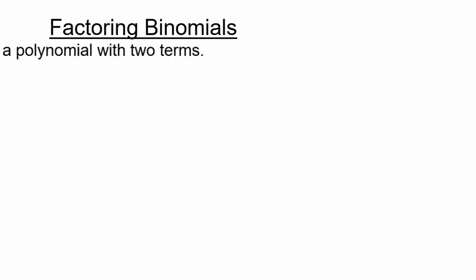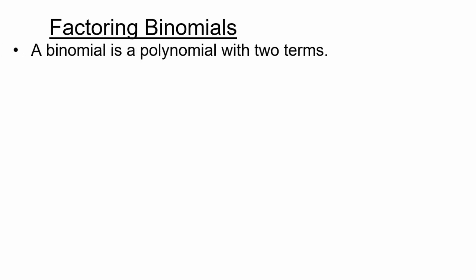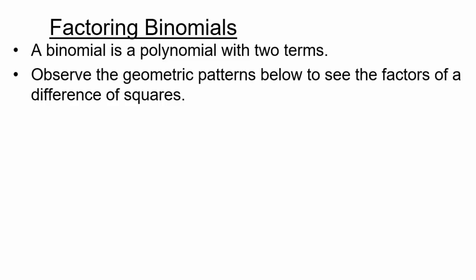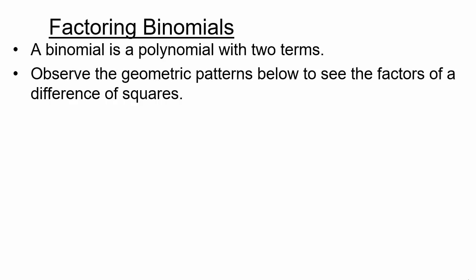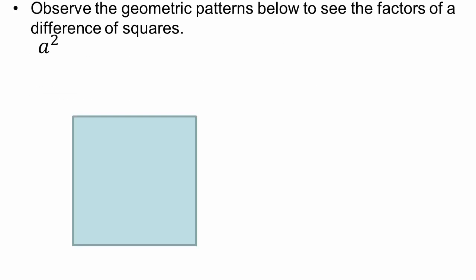Let's continue factoring binomials. A binomial is a polynomial with two terms. Observe the geometric patterns below, because this is going to help you do some specific binomial factorings. If you look at a squared, we can imagine that as being a by a — a here and a here — that's just like our algebra tiles.